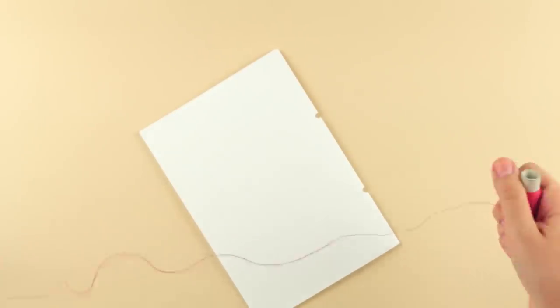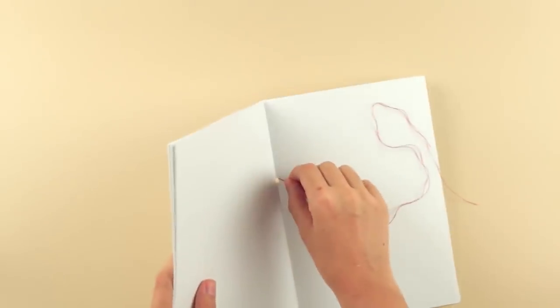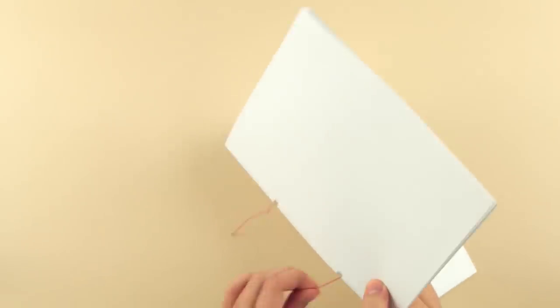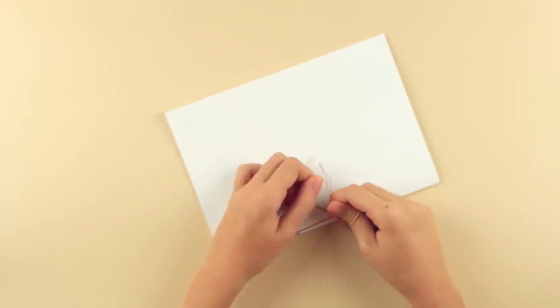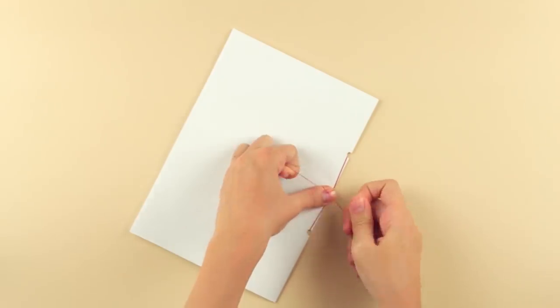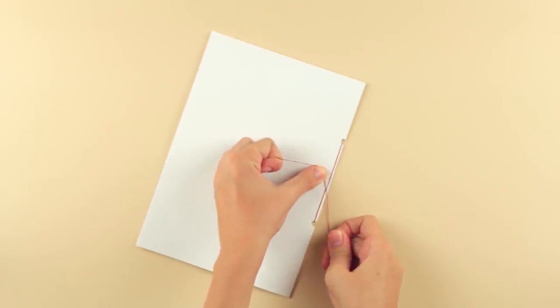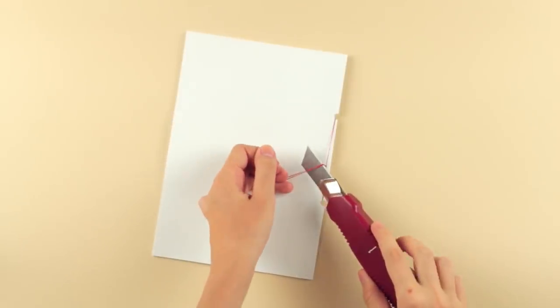Fasten the pages with thread. If you use a thin thread, fold it in half for extra strength. Pass the thread through the holes from inside. Take it out, pulling up well. Tie a knot. Cut off the excess thread.